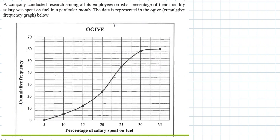This is our ogive and our x-axis here is percentage of salary spent on fuel, so it's in percentages. And then this is obviously the cumulative frequency. Ogives are cumulative frequency graphs - cumulative frequency is all the frequency added together, so it's not just normal frequency, it's cumulative.